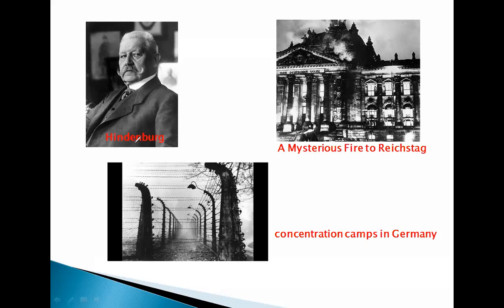President Hindenburg was the president of Germany when Hitler's party got a majority. He offered the chancellorship to Hitler. The chancellorship is like the prime minister in India — the highest position in the cabinet of ministers. In Germany they use the term 'chancellorship' rather than prime minister, and that term is still used today.